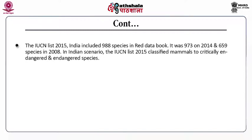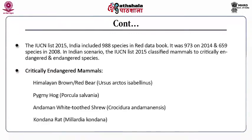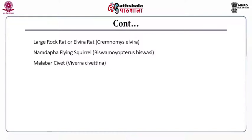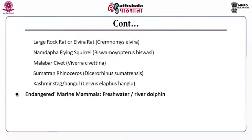The IUCN list 2015 classifies the following mammals as critically endangered in India: Himalayan brown/red bear, pygmy hog, Andaman white-toothed shrew, Kondana rat, large rock rat or Elvira rat, Namdapha flying squirrel, Malabar civet, Sumatran rhinoceros, and Kashmir hangul or stag.